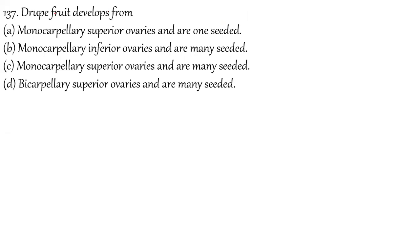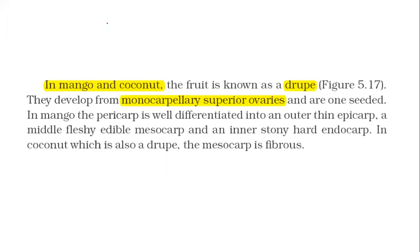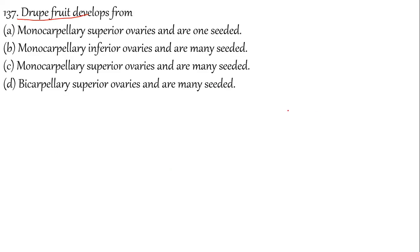Question 137: Drupe fruit develops in mango and coconut. They develop from a monocarpellary superior ovary. Since they are from the monocarpellary superior ovary, they are single-seeded plants. Option A is correct — monocarpellary superior ovary, one-seeded.